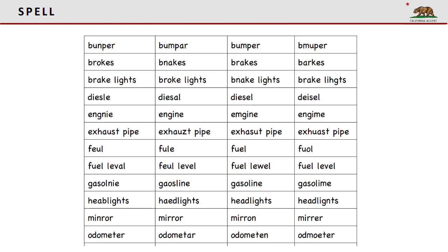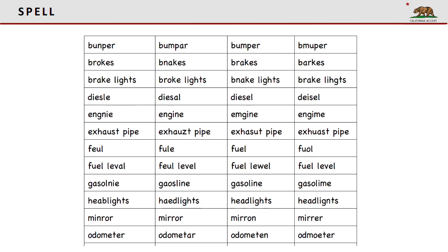Now let's do the spell section. If you have the worksheet, you can circle the correct answer. If you don't have the worksheet, you can just point to the correct answer. Bumper. Brakes. Brake lights. Diesel. Engine.